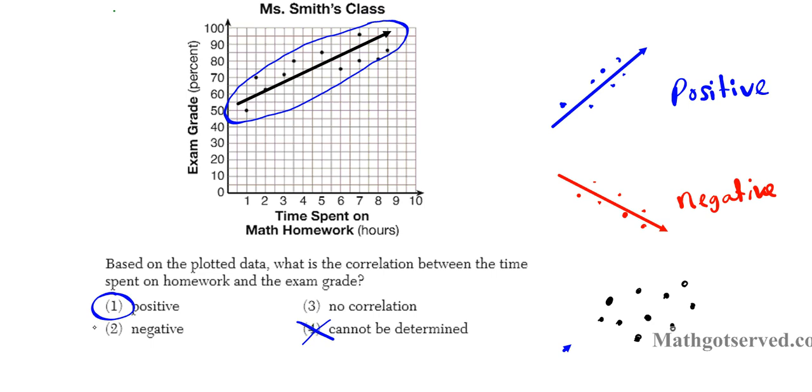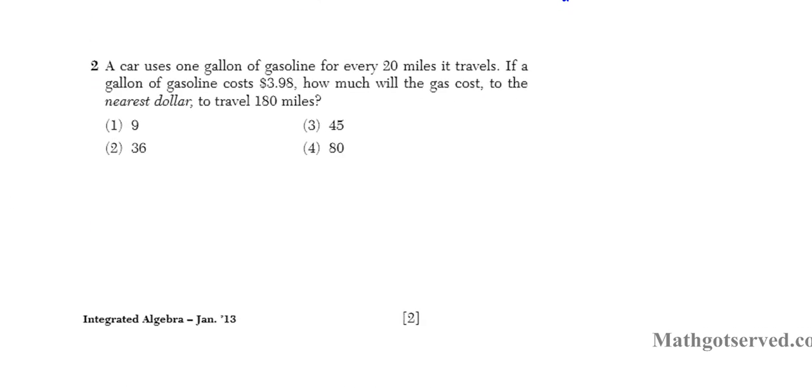So there you have it. Let's take a look at question two. It says, a car uses one gallon of gasoline for every 20 miles it travels. If a gallon of gasoline costs $3.98, how much will the gas cost to the nearest dollar to travel 180 miles?